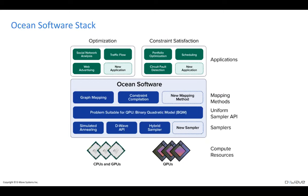Above the samplers we have a uniform sampler API level, which lets us submit problems abstractly across different resources. Finally, above that, we have our mapping methods that allow us to generate problems from things you'd recognize — like this pipeline problem, logistics, quantum material simulation, or machine learning. We want to reach from our uniform API into these areas so that experts in those domains don't have to become experts at quantum programming. Target application areas include scheduling, circuit fault detection, and portfolio optimization.